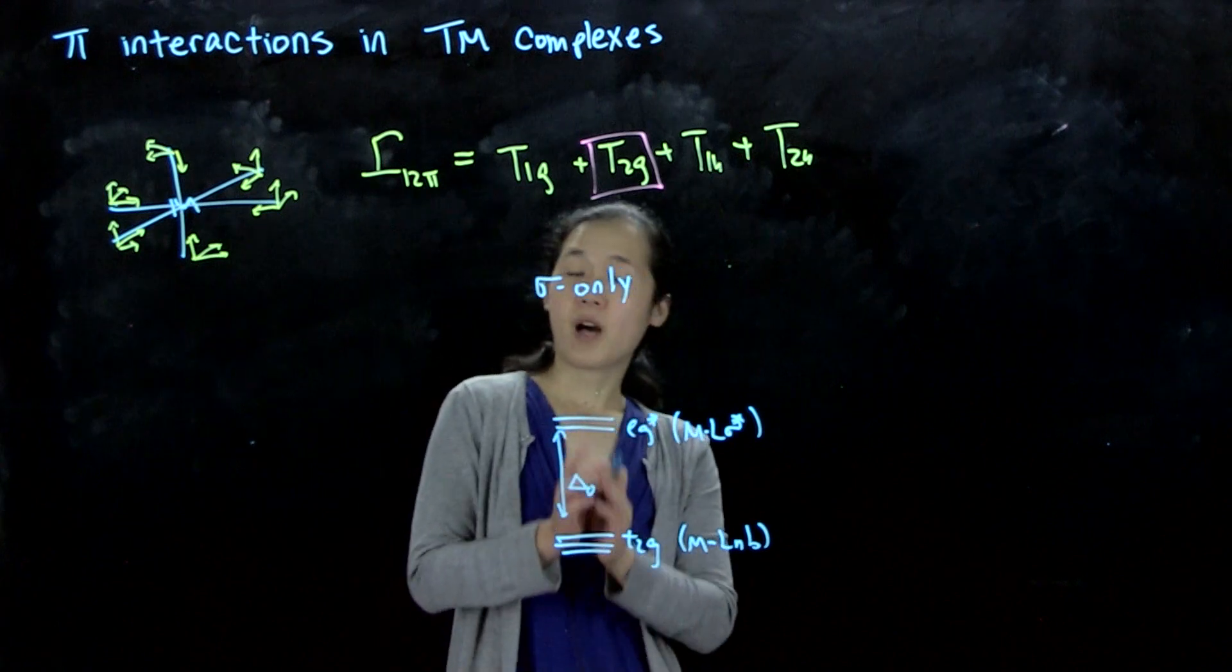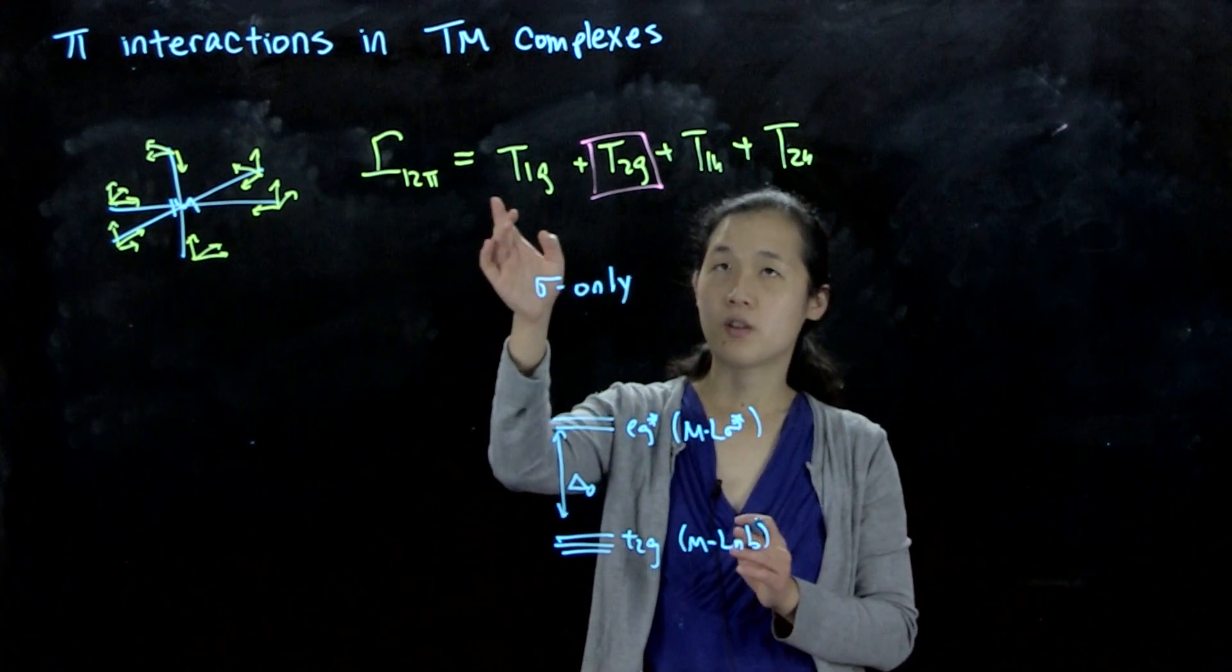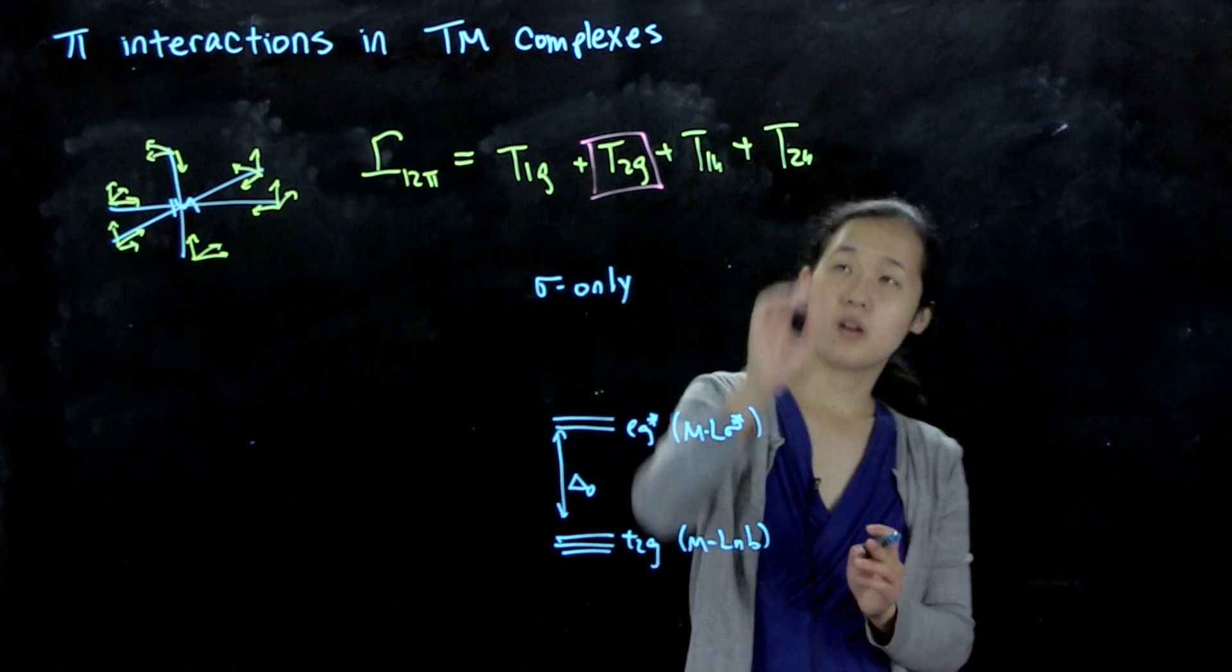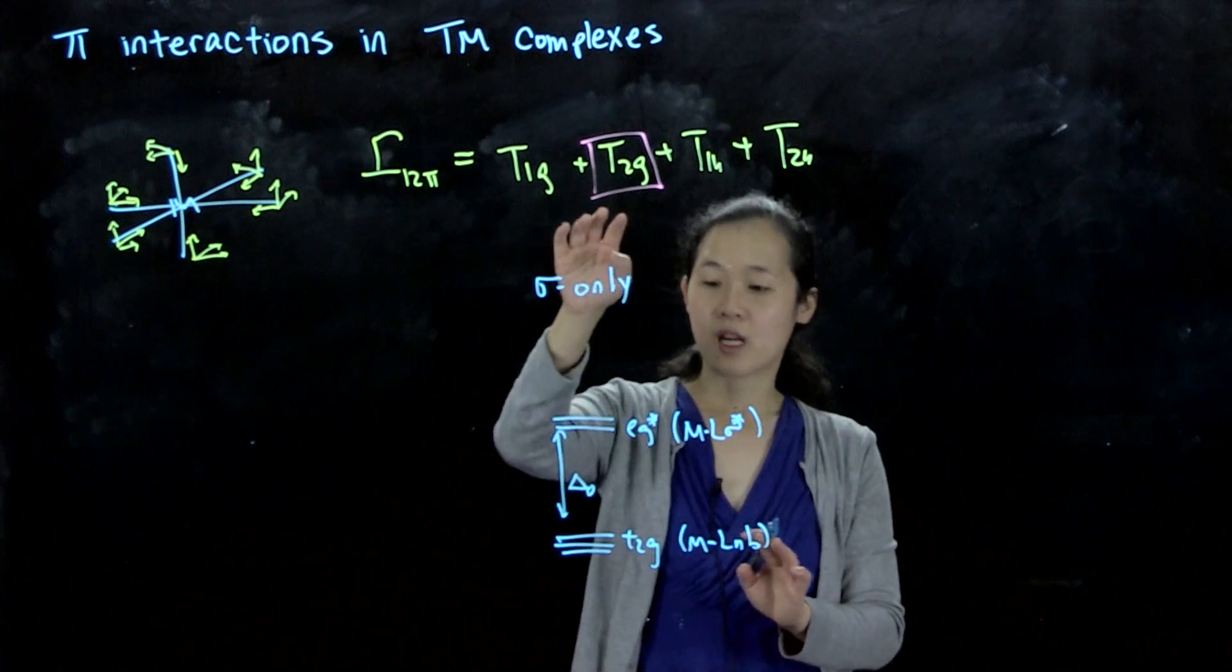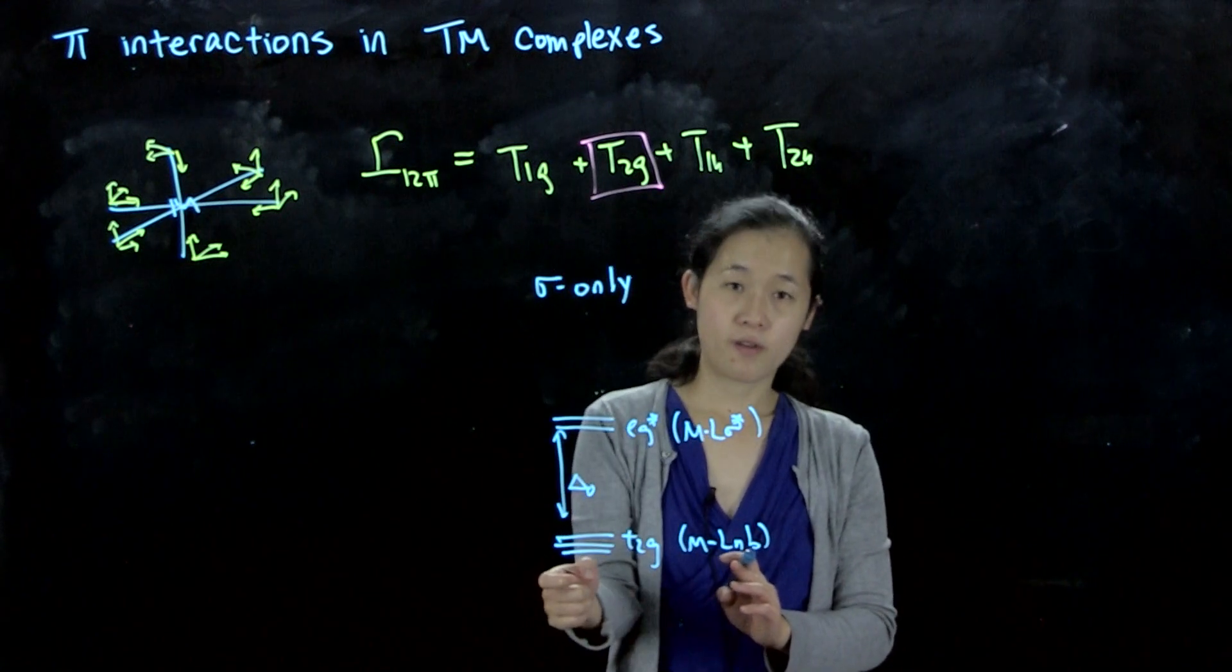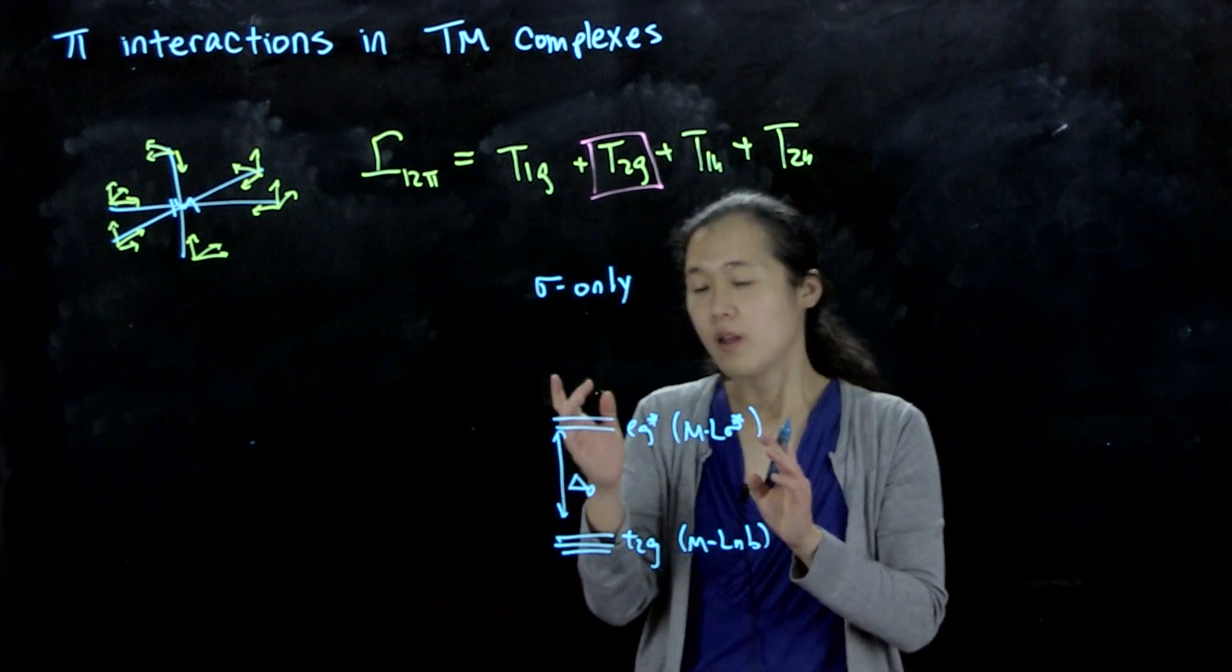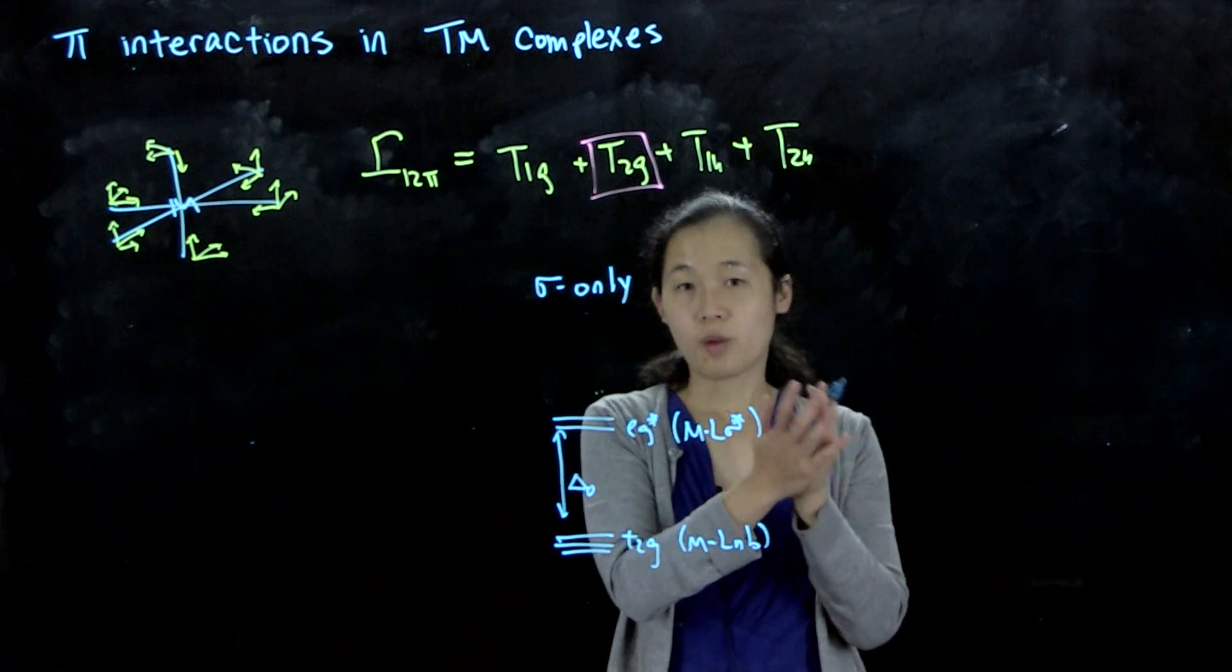When we think about pi interactions, now we have to add on these pi-symmetry orbitals, T1G, T2G, T1U, and T2U. The T2U can interact with our p orbitals, but if we just look at the d orbital splitting, all we care about is T2G. So now there can be interaction with the T2G, which was previously non-bonding. The nature of that interaction depends on whether your ligand is a pi-acceptor or a pi-donor.